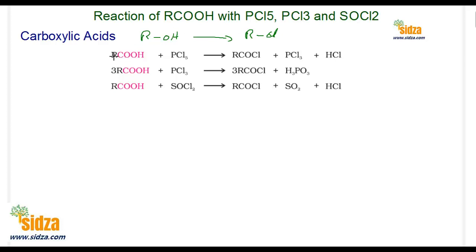Similarly, in carboxylic acids you can replace the OH group if you react with PCl₃, PCl₅, or thionyl chloride. This is a substitution reaction — you are replacing OH by Cl, so this is a nucleophilic substitution reaction. However, the mechanism here is a little different than the reaction of alcohols with PCl₅ or PCl₃.